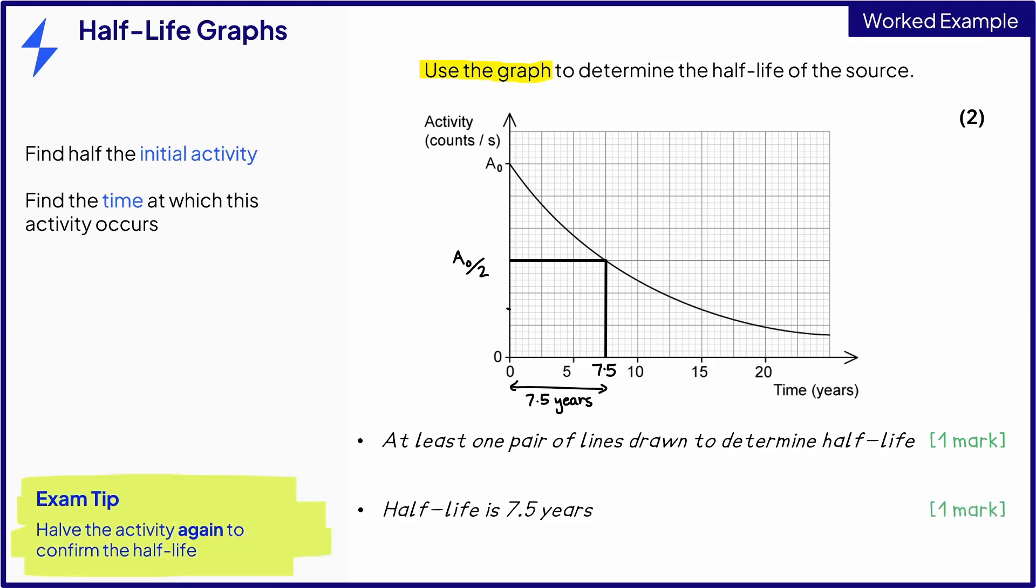Stopping here in your exam would be unwise, when we can do the same thing again to double-check our first answer. Halve the activity again and read the time taken to go from a0 over 2 to a0 over 4 using the graph. This is also 7.5 years, confirming our answer. That's two guaranteed marks in your exam.